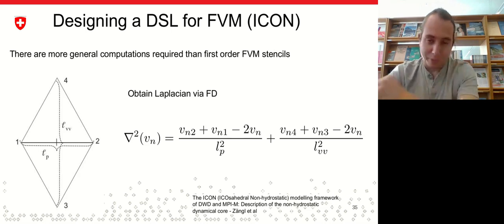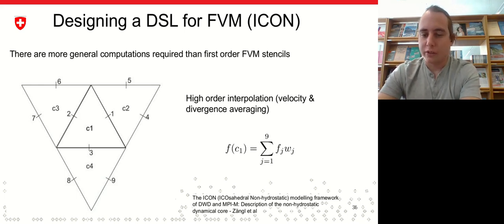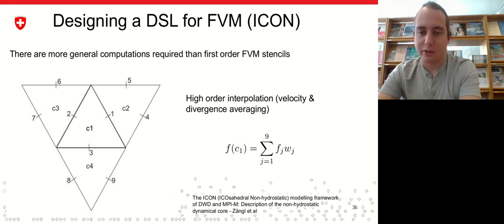However, if you further look into the ICON paper and model, you will realize that there is way more general computations than what we have just seen. The ICON model, even though it's a mostly finite volume model, uses a finite difference stencil to dual applications. So you have now a computation which ends up on an edge, but looks at four vertex neighbors, some of which, at least, are not directly connected to the original edge. Also, ICON does some quite involved computations for interpolations, for example, for velocity and divergence averaging. ICON looks at nine neighbors to a cell. Here we have our cell, and ICON looks at these nine edge neighbors to do, for example, the divergence averaging.